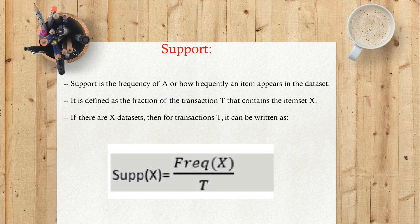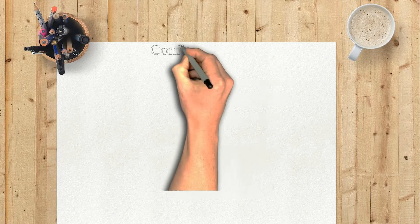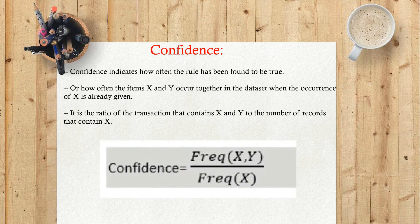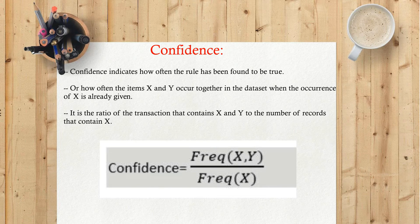Confidence: Confidence indicates how often the rule has been found to be true, or how often the items X and Y occur together in the dataset when the occurrence of X is already given. It is the ratio of the transaction that contains X and Y to the number of records that contain X.